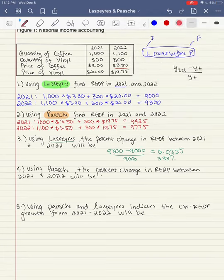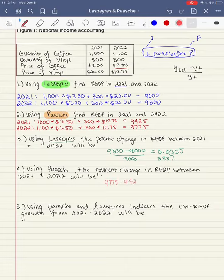And then now for Paasche, we're going to do the same exact thing. 9775 minus 9425 over 9425. And then when we do this, we are going to get 0.037 or we can just say 3.71%. Okay.